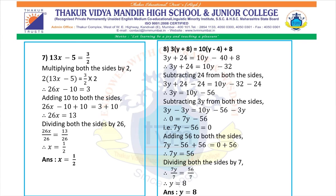Eighth: 3 in the bracket (y plus 8) equals 10 in the bracket (y minus 4) plus 8. Solving the brackets: 3y plus 24 equals 10y minus 40 plus 8, so 3y plus 24 equals 10y minus 32. Subtracting 24 from both sides: 3y equals 10y minus 56. Subtracting 3y from both sides: 0 equals 7y minus 56. Adding 56 to both sides: 7y equals 56. Dividing both sides by 7: y equals 8. The answer is y equals 8.